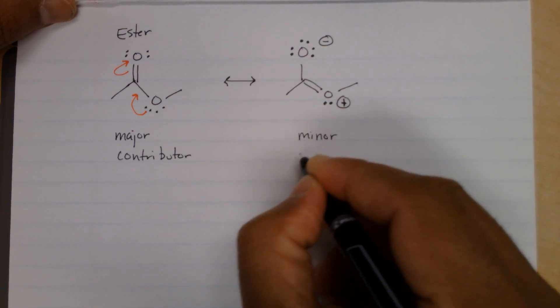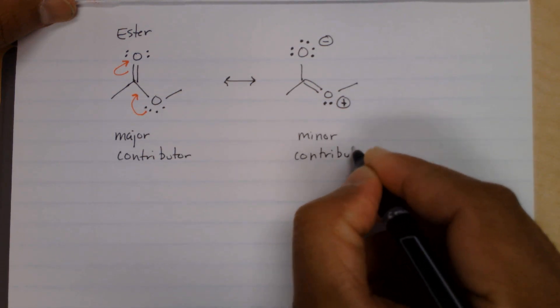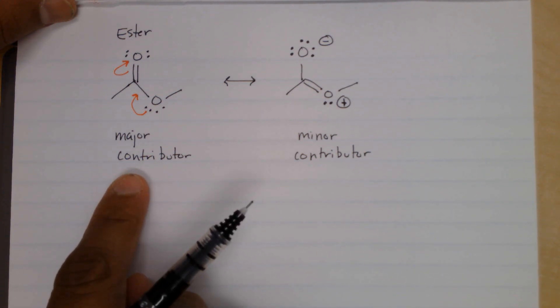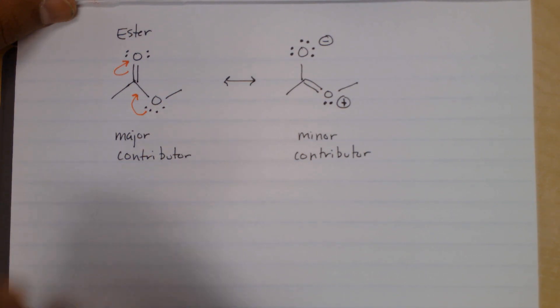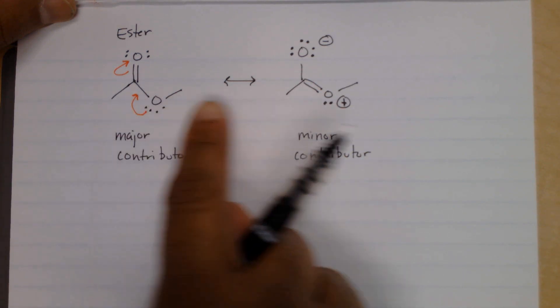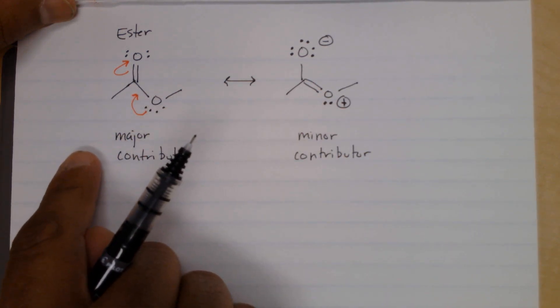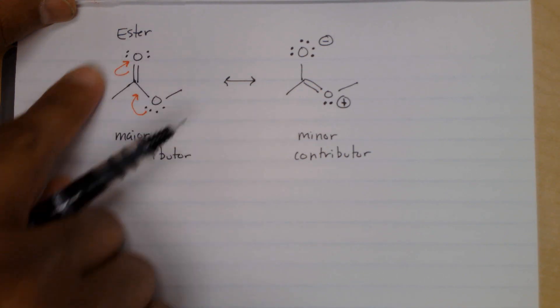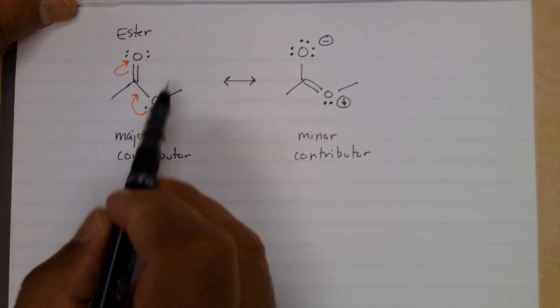And the reason for that is because molecules will be more stable when the octets are full and we minimize the formal charges. And so in this case, both molecules have their octets full, but here we minimize the formal charge. There's zero formal charge on all the atoms.